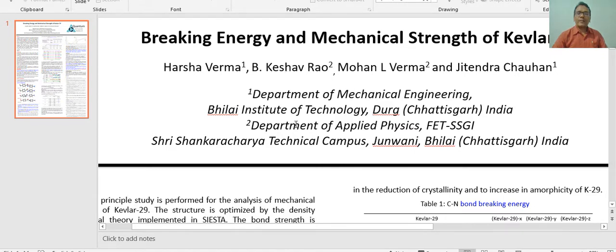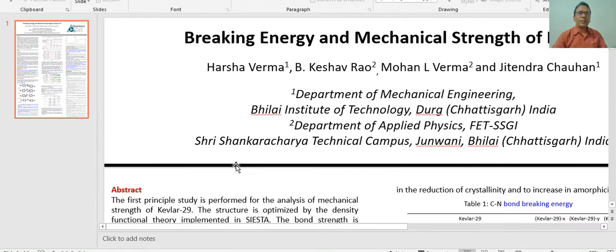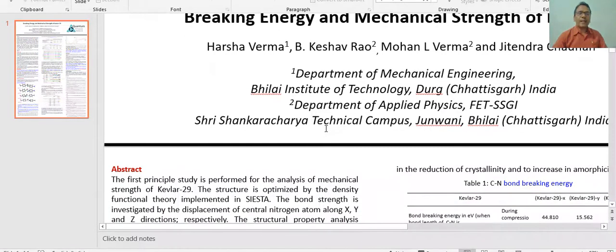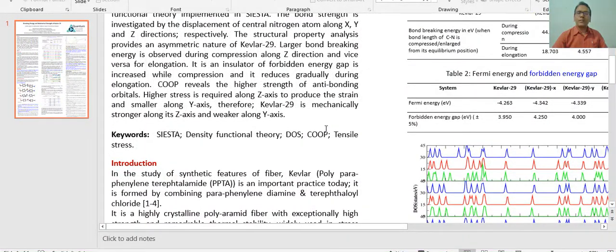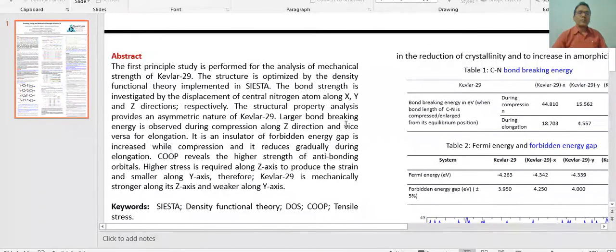In this conference, this paper has been included as a poster, which is categorized in the form of abstract, introduction, methodology, results and discussion, then conclusion and references. The first part, the abstract, is actually a first principle-based study performed for the analysis of mechanical strength of Kevlar 29. Initially, the structure is optimized by density functional theory, which is implemented in SIESTA.